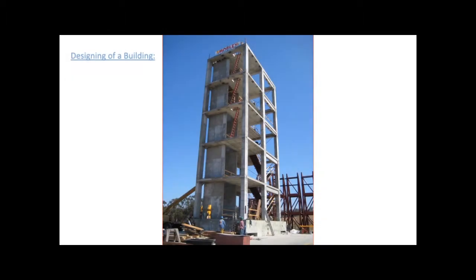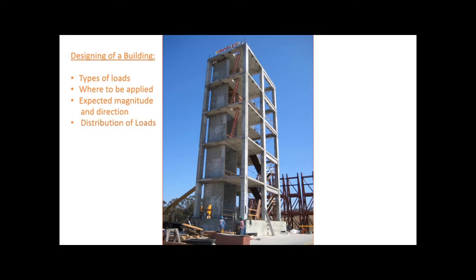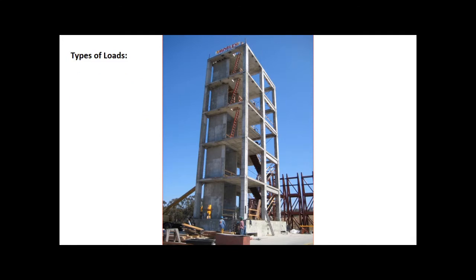During the design of a building, engineers must first determine the types of loads that will be applied to the building, and in particular, have knowledge of where they are applied and their expected magnitude and direction. Once these are known, the building's structural system is analyzed under different load case combinations. The distribution of loads to structural components is a key step in the design process.